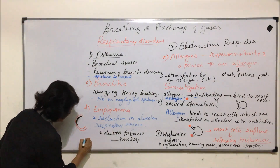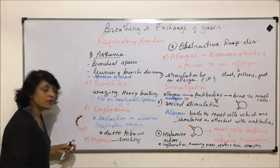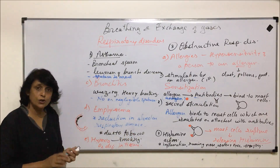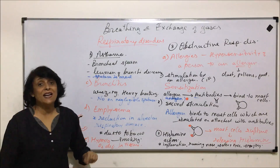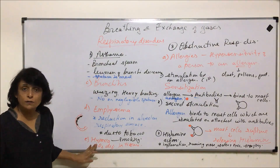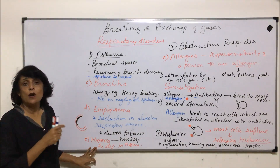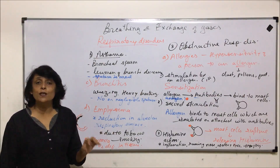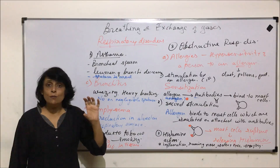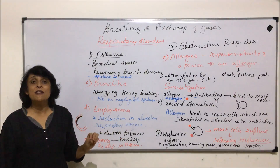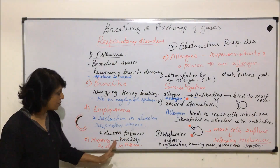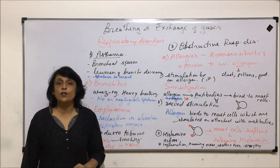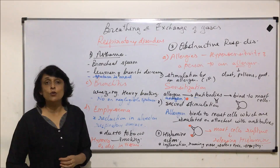Another condition is hypoxia — oxygen deficiency in tissues. One reason is carbon monoxide poisoning. Carbon monoxide binds with hemoglobin to form a permanent complex called carboxyhemoglobin. With hemoglobin permanently blocked, less hemoglobin is available to transport oxygen, so less oxygen reaches the tissues — this is hypoxia. These are the important conditions and disorders related to the respiratory system.